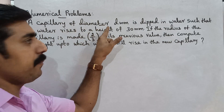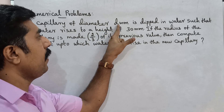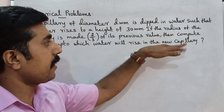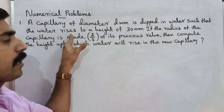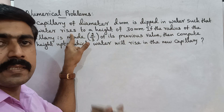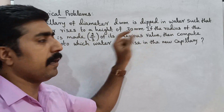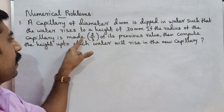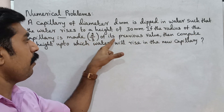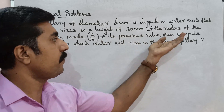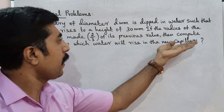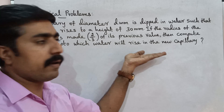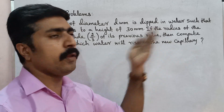A capillary of diameter d mm is dipped in water such that the water rises to a height of 30 mm. If the radius of the capillary is made 2 by 3 of its previous value, then compute the height up to which water will rise in the new capillary.